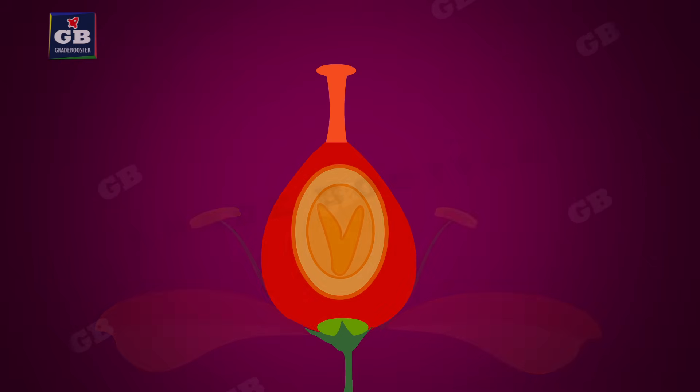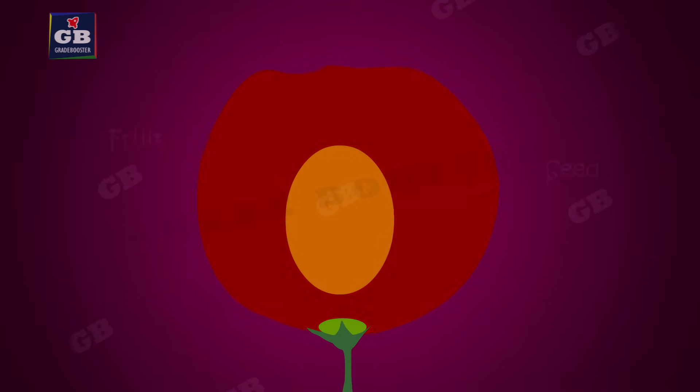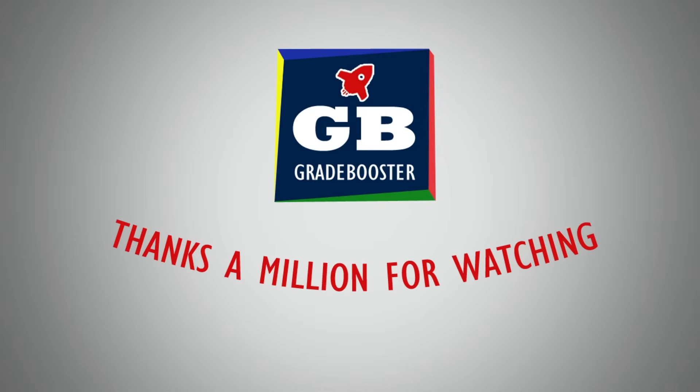After fertilization, the zygote divides several times to form an embryo within the ovule. The petals, sepals, stamens, style, and stigma may shrivel and fall off. The ovule develops into a seed, and the ovary grows to form a fruit.